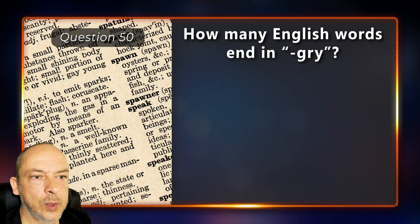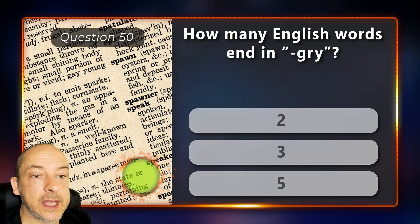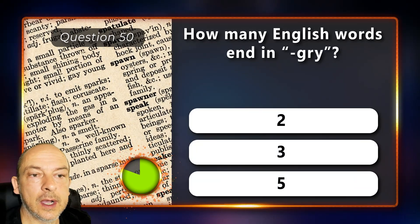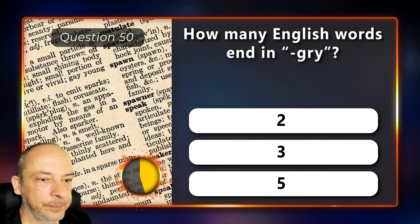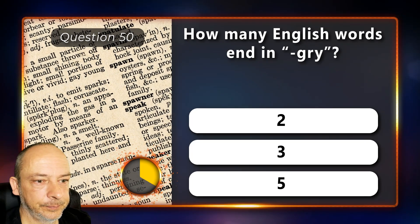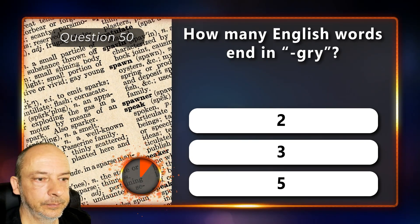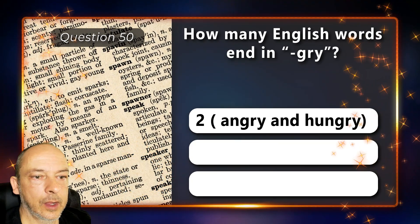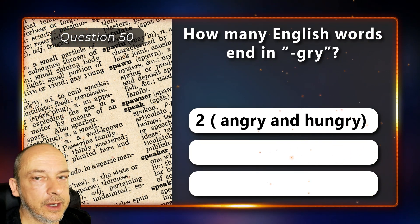Final question: how many English words end in 'gry' — two, three, or five? Only two: angry and hungry.